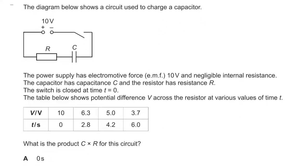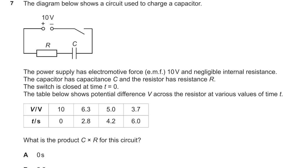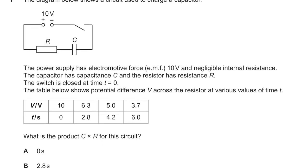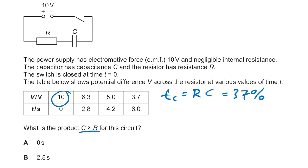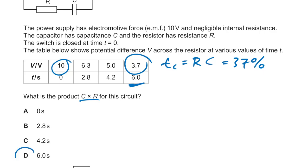Question seven: a capacitor circuit with EMF of 10 volts. The product RC is the time constant. After one time constant, the PD and charge drop to 37% of the original value — that gives us 3.7 volts, so the time constant is 6 seconds.